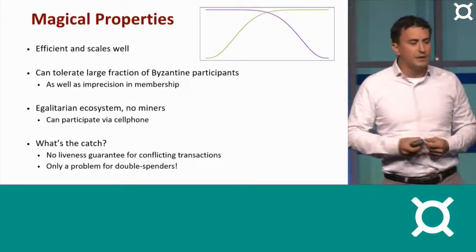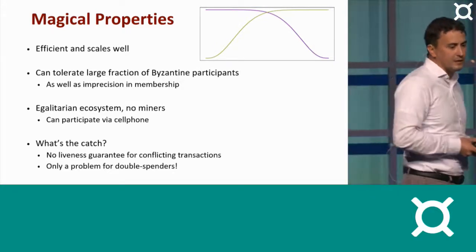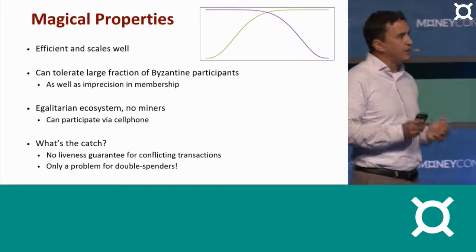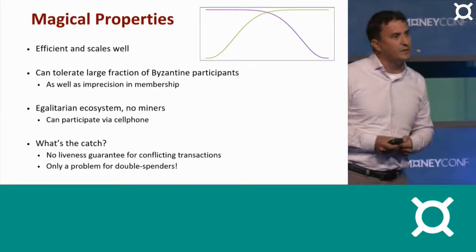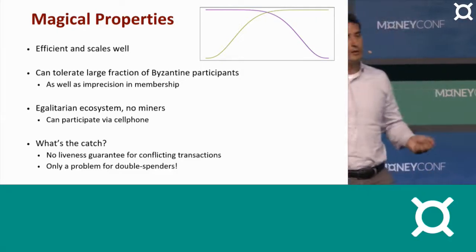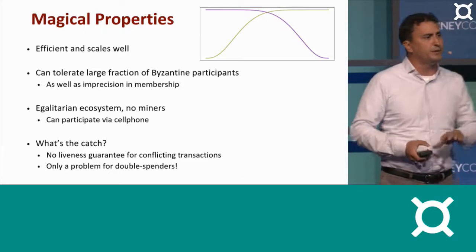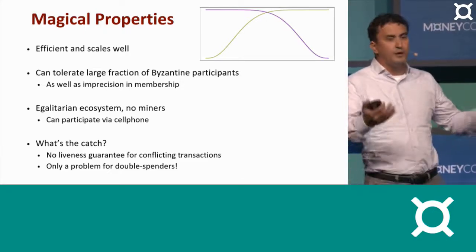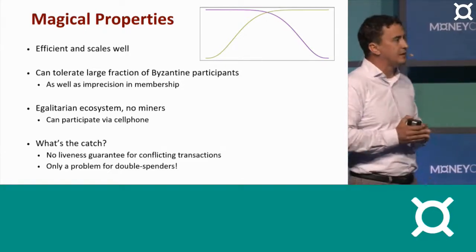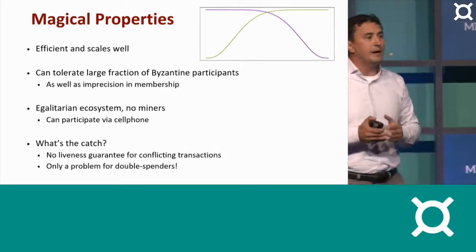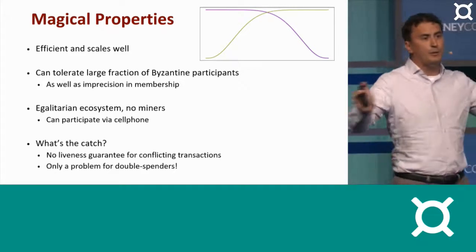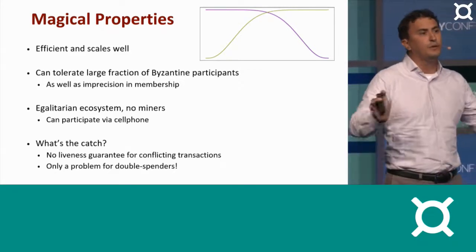But there are also other things that come with this. This can tolerate a large percentage of Byzantine participants with no impact on safety. You can have up to 50% of the people actually be Byzantine. Sometimes they say blue, sometimes they say red, to try to pull people back and to try to keep the entire thing in balance. But they will be unable to do this in a way that causes two people to decide on two separate things.